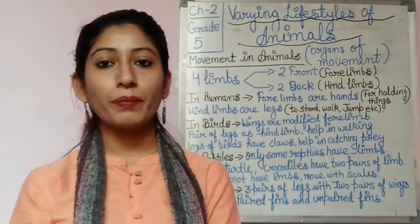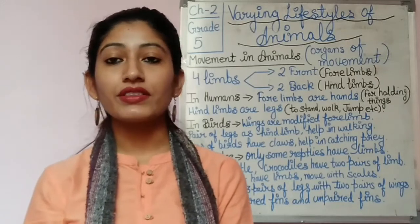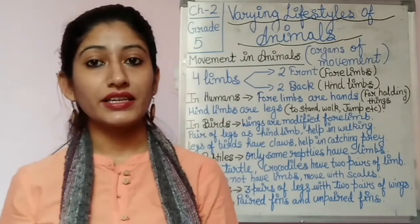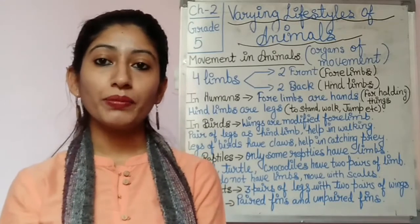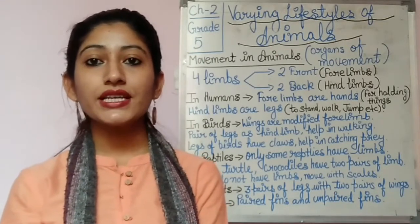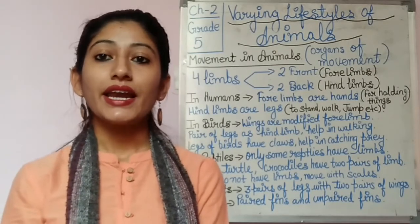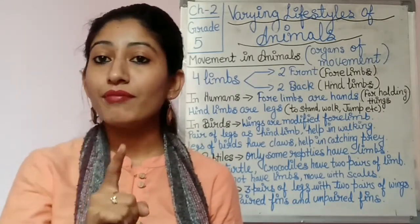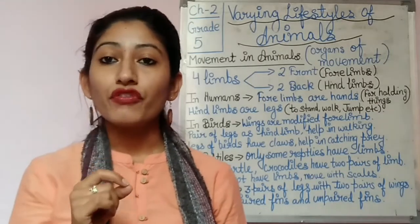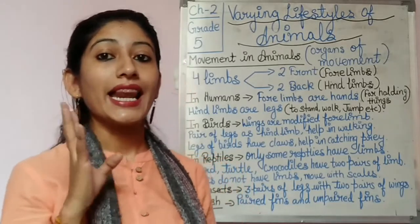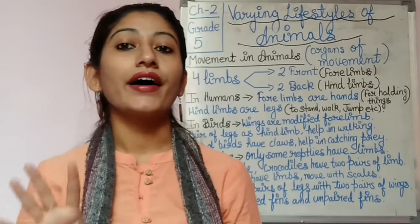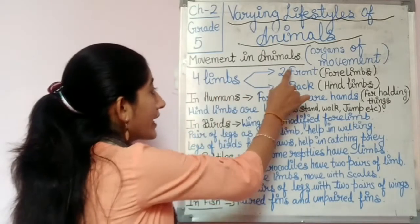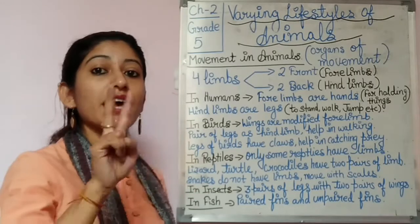Kindly open book page number 13. Though I am explaining you each and everything here, but the book will help you in seeing the diagrams and pictures that are given. So, one thing to keep in mind when talking about movement: most animals have four limbs, and these four limbs are divided into two parts — two front limbs and two back limbs.